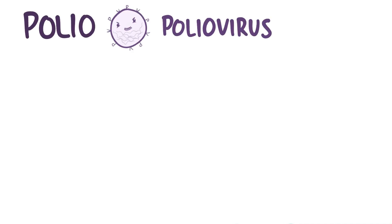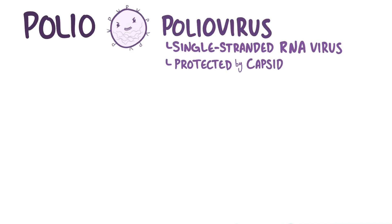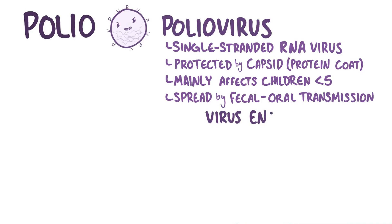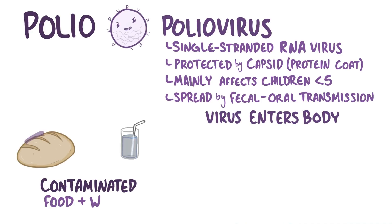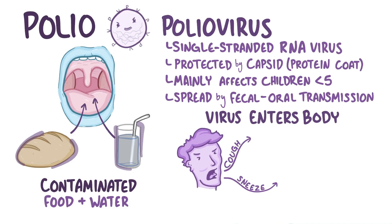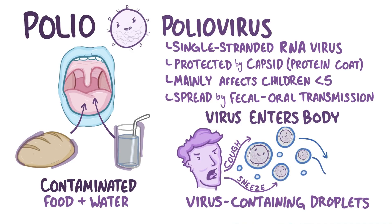Polio is a viral infection caused by poliovirus, which is a single-stranded RNA virus that's protected by a capsid, which is a protein coat. Polio mainly affects children under the age of 5 and is spread by fecal-oral transmission, which means that the virus usually enters the body through contaminated food and water that goes in the mouth. It's also transmitted when an infected person sneezes or coughs, which spreads thousands of virus-containing droplets into the local area.